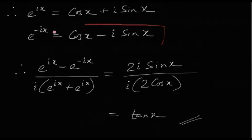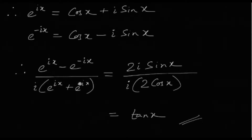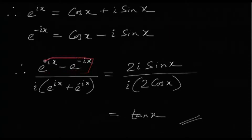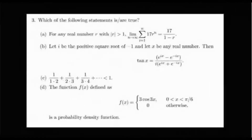Subtracting: e^(ix) − e^(−ix) = 2i·sin x. Adding: e^(ix) + e^(−ix) = 2·cos x. So the expression becomes 2i·sin x / (i · 2·cos x) = sin x / cos x = tan x. Option B is true.